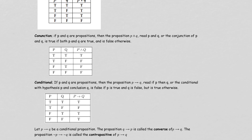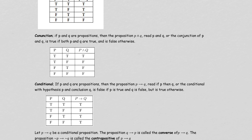Let's look at conjunctions. A conjunction is another way of saying 'and,' and this is the sign for it. This one produces all false statements, except when both P and Q are true. If both statements are true, it can be true, but if one of them is false, then it will be false.